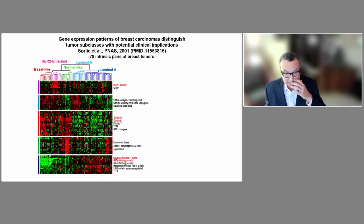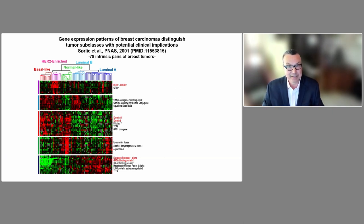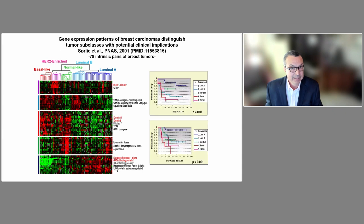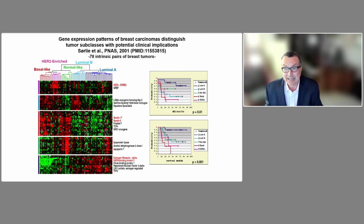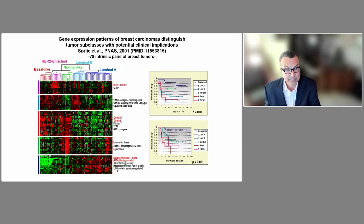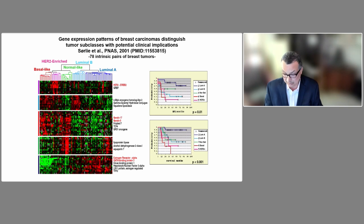A few years later, with an increased sample size of 78 before-and-after treatment pairs, we basically see the same overall patterns, and now we get separation of luminal A and luminal B. One key addition from this paper was the first demonstration of prognostic differences of the subtypes for both relapse-free survival and overall survival, pointing out that luminal A's do best and the other three subtypes — HER2-enriched, basal-like, and luminal B — do significantly worse. This data is pre-trastuzumab; before trastuzumab, the HER2-enriched subtype was potentially the worst prognostic group, but that has since changed fortunately thanks to trastuzumab.